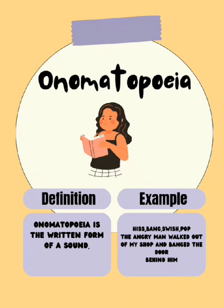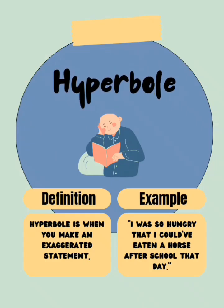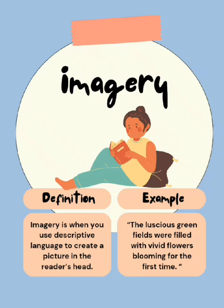The next on the list is hyperbole. It's a way of speaking or writing that makes something sound better, more exciting, or dangerous — in short, exaggeration. For example: 'I was so hungry that I could have eaten a horse.' That's not possible, but that is hyperbole. The opposite of hyperbole is litotes, which is understatement.